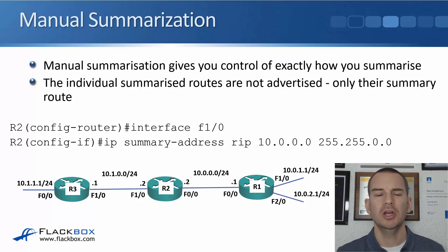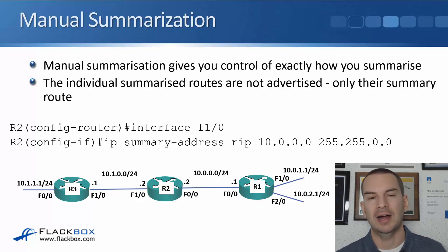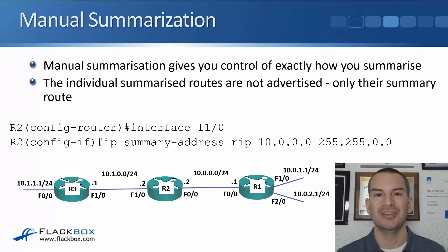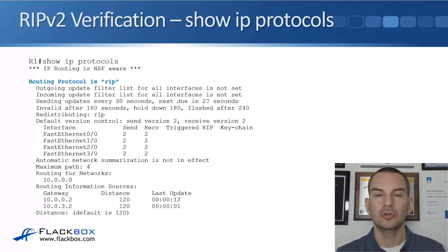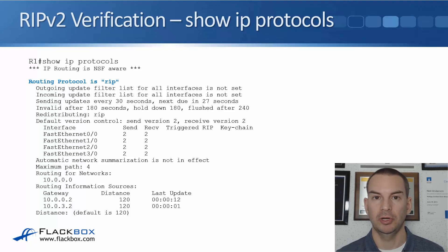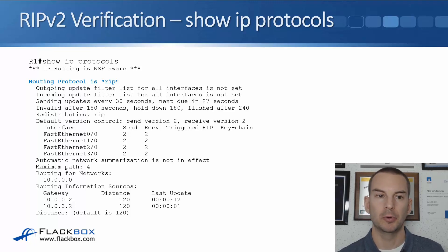To be honest, RIP is only used in really small networks, labs, or demos, so your network probably won't be large enough to care too much about summarization anyway. To verify RIP — or any routing protocol running on a router — we can use 'show ip protocols'.